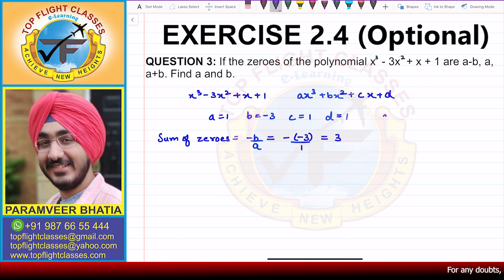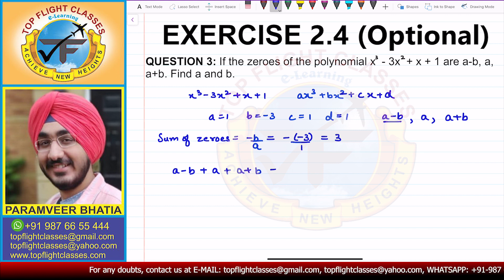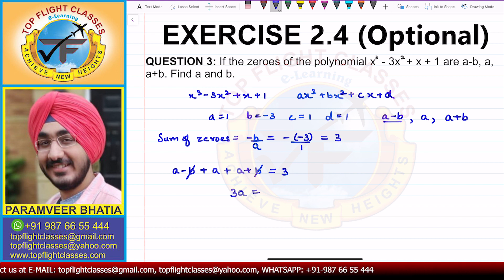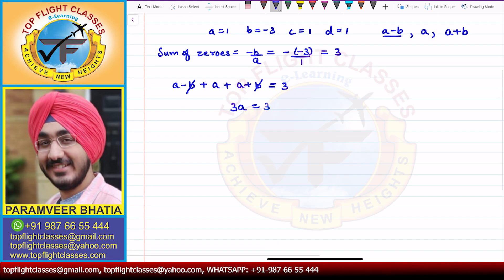In this case, the sum of zeros is given by (a-b) + a + (a+b). So we get a - b + a + a + b = 3. This b and this b cancel, so you get 3a = 3, which implies that a = 1.